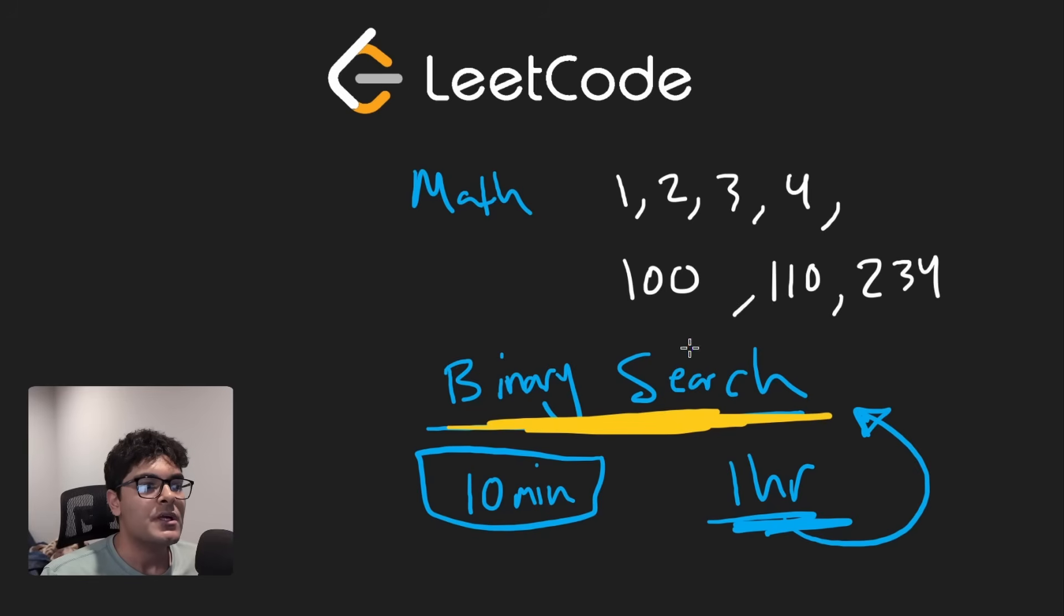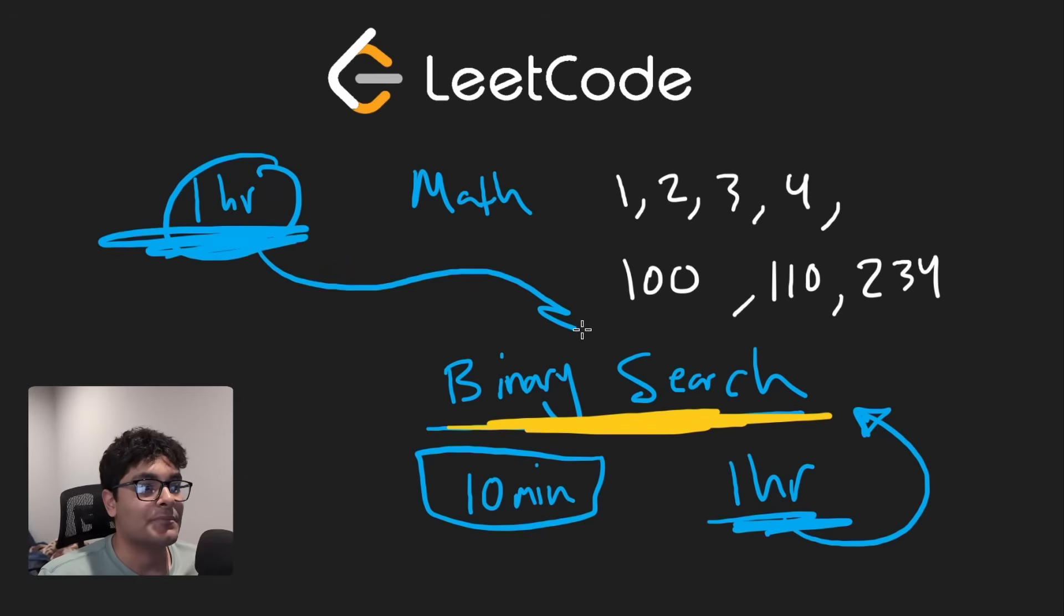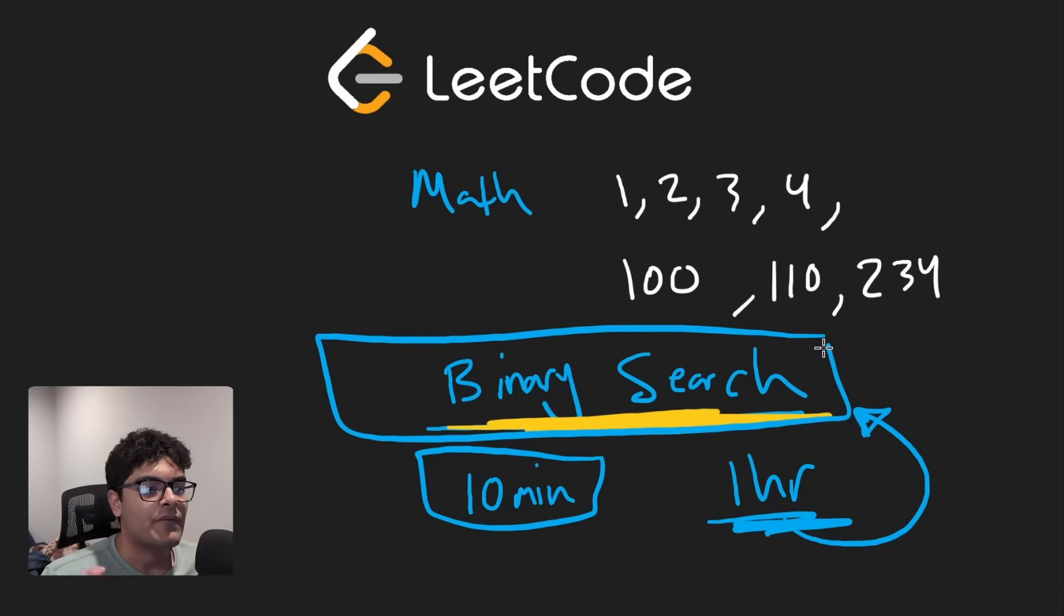Then you continue solving LeetCode problems. Maybe a month later, you solve another medium binary search question, you're not able to solve it, you look at the solution, it takes you some time to figure out the solution. Once you realize it's binary search, you feel bad, you realize it's similar to a problem you've already solved, but you weren't able to figure it out again. Why not? Because you tricked yourself, you think you understand the solution, and maybe you did for a very short time. But that didn't really sink in.